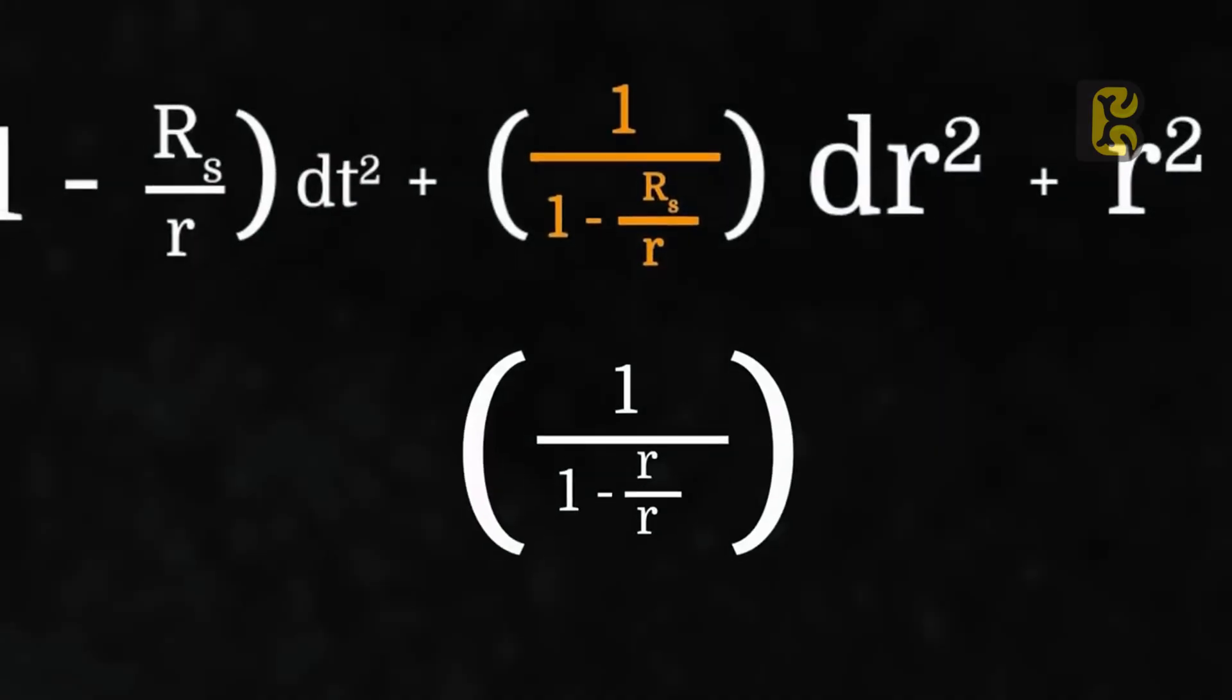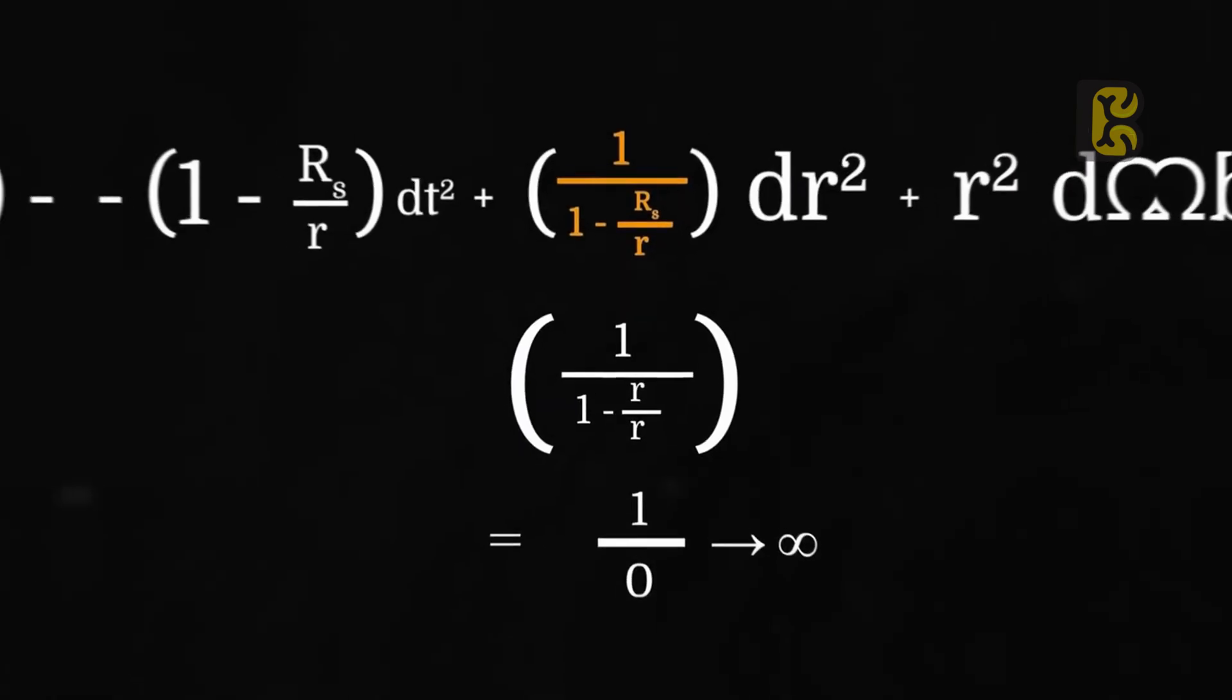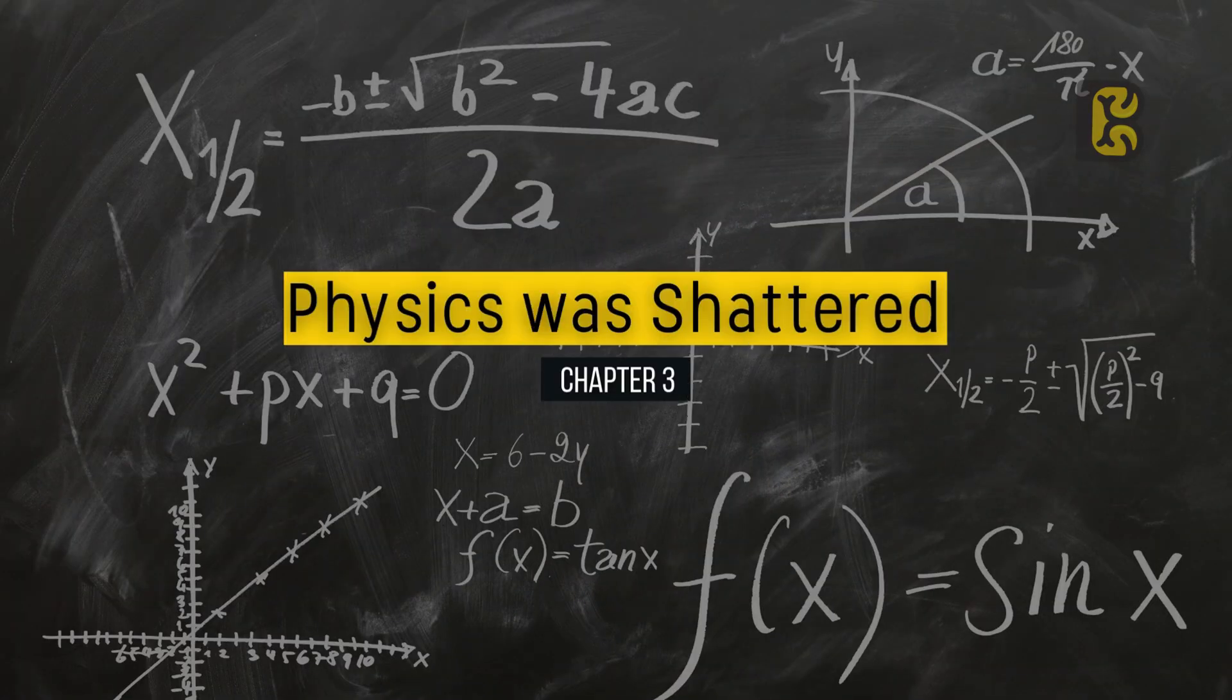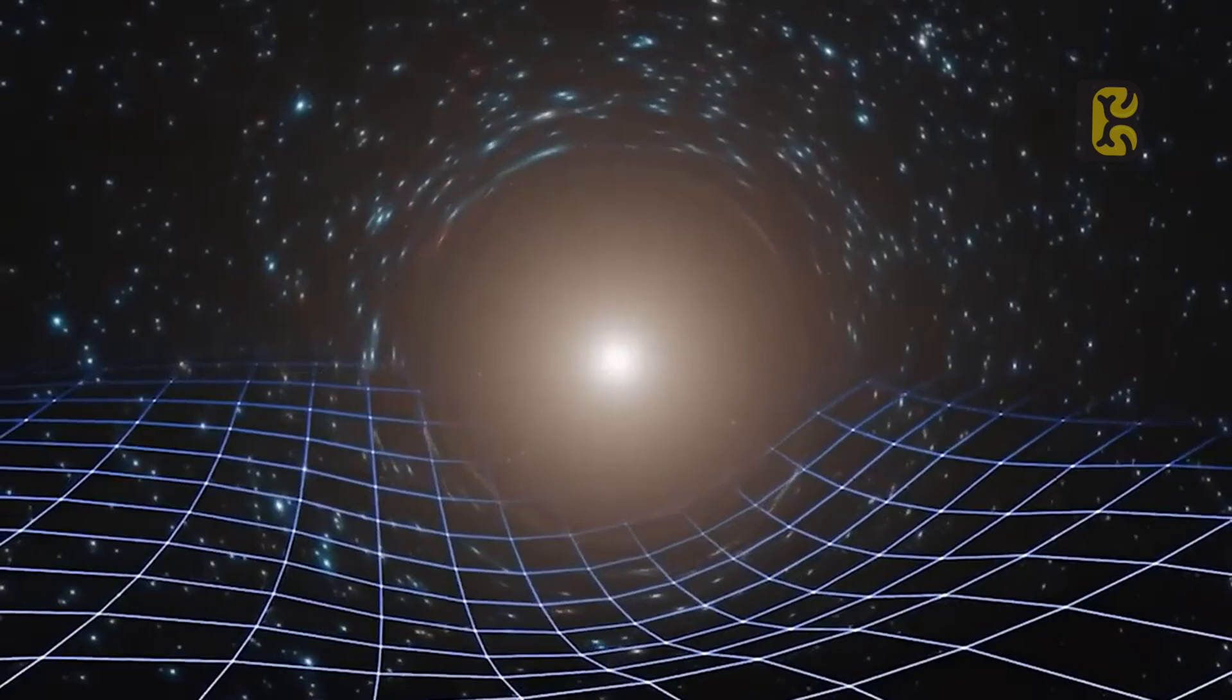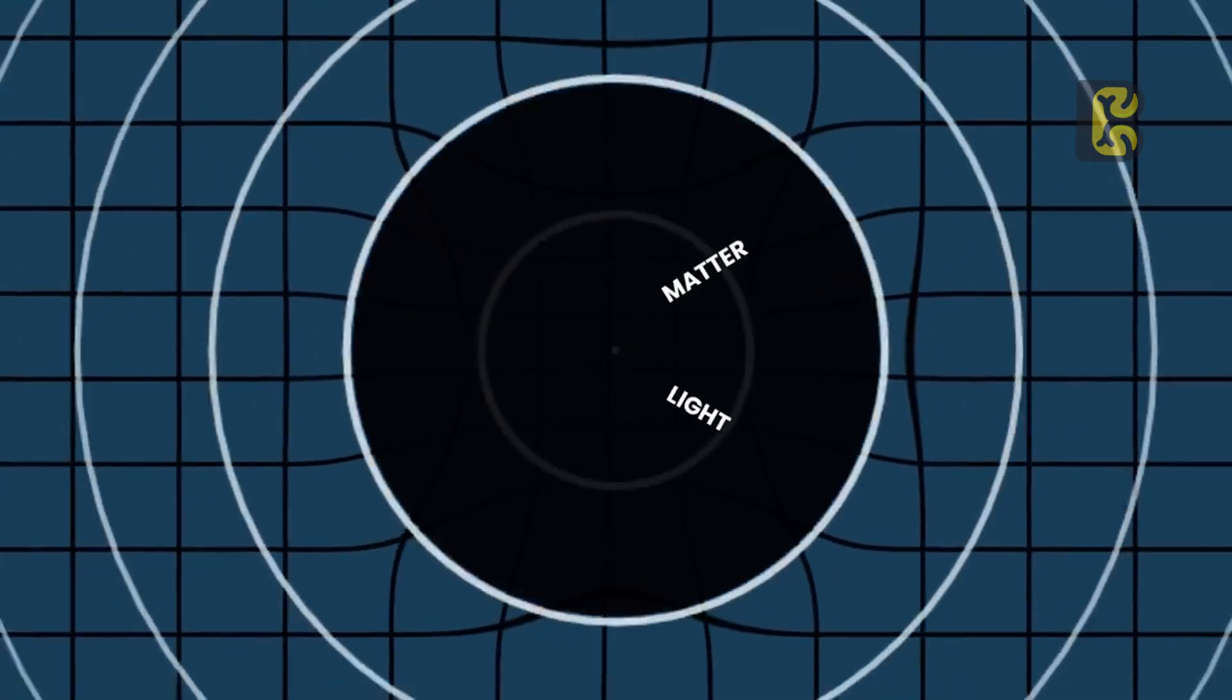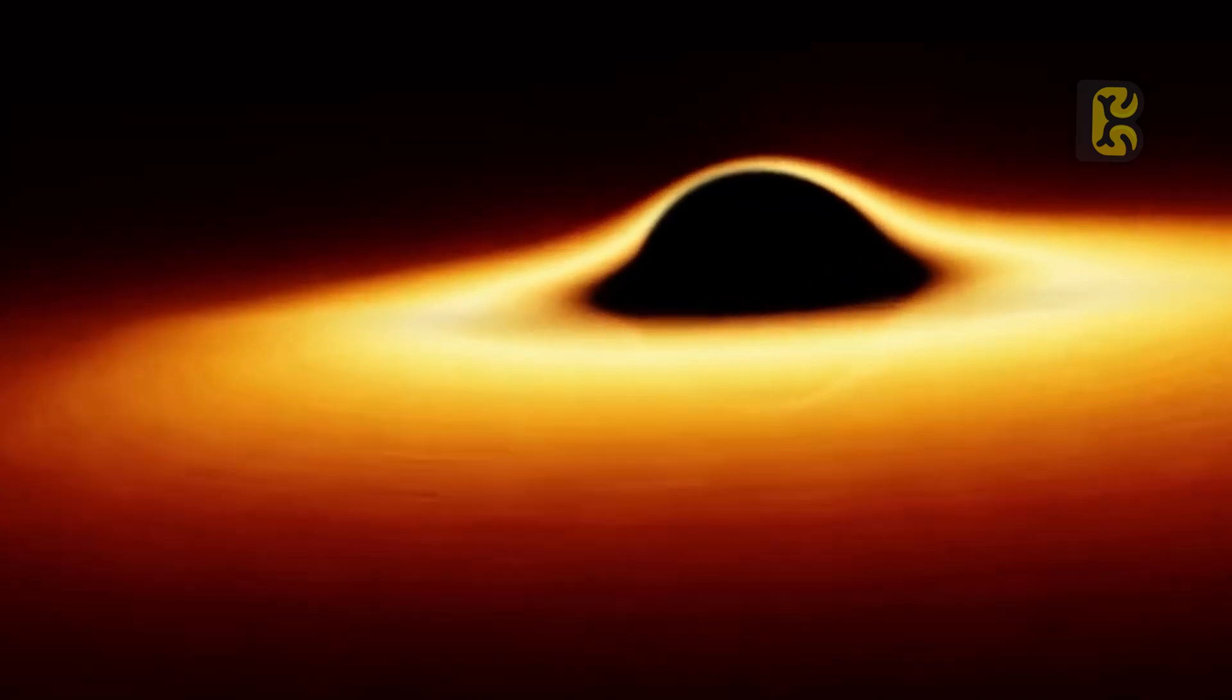By 1920, this led to two interpretations. Either the equation completely failed to explain the gravitational field, or there existed a mass in the universe where the gravitational field was so intense that nothing could escape from it. However, in the early 20th century, even Einstein himself did not imagine that such an object could actually exist in the universe, so he initially dismissed the concept of singularities.